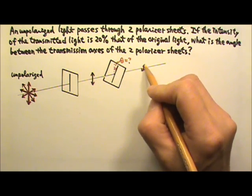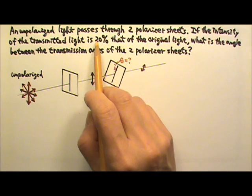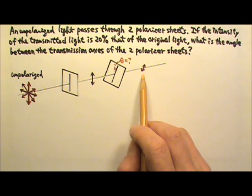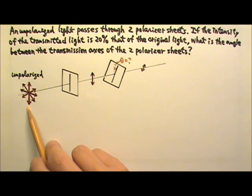Therefore only the electric field in this direction gets to go through. And we're told this light that comes out has an intensity that is 20% the intensity of that original light.